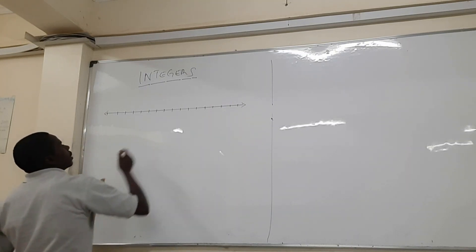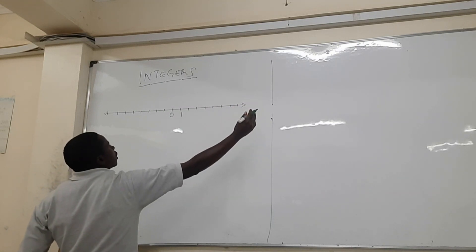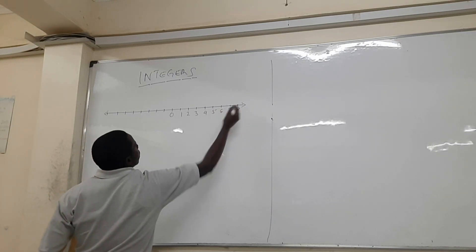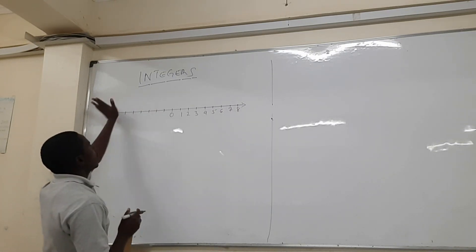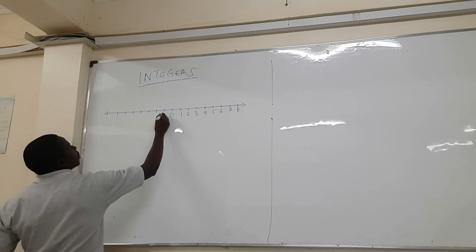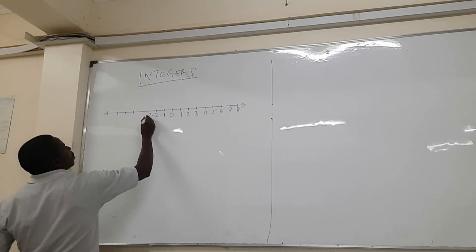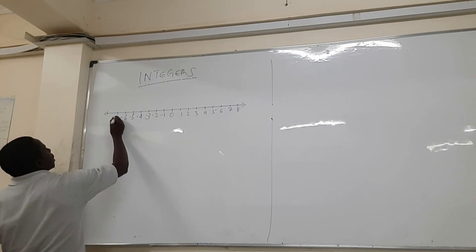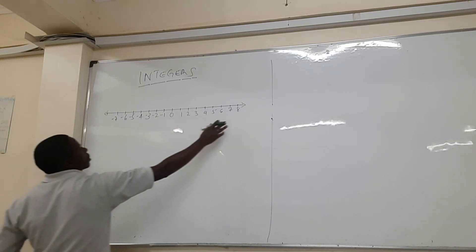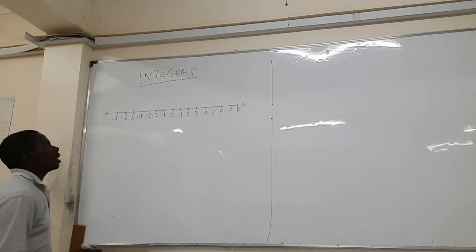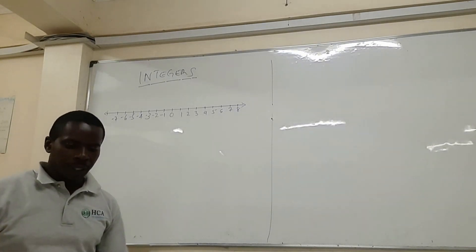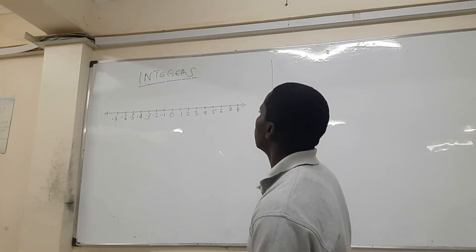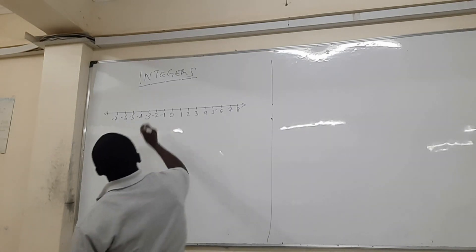So we have zero there. On the right-hand side of the number line, the numbers are positive: one, two, three, four, five, six, seven, eight. On the left-hand side of the number line, we have negative numbers: minus one, minus two, minus three, minus four, minus five, minus six, minus seven — and it can continue as far as required. That's how we draw a number line.